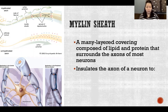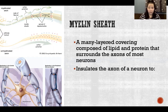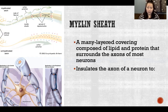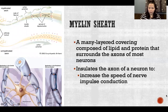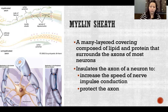The axon of a neuron's job is to transmit an action potential, or an impulse, along its length — basically conducting an electrical current so that it can send its signal to another neuron or to an effector, a muscle or gland. The myelin sheath insulates the axon to increase the speed of nerve impulse conduction — that's the most important function — and also acts as protection for the axon.